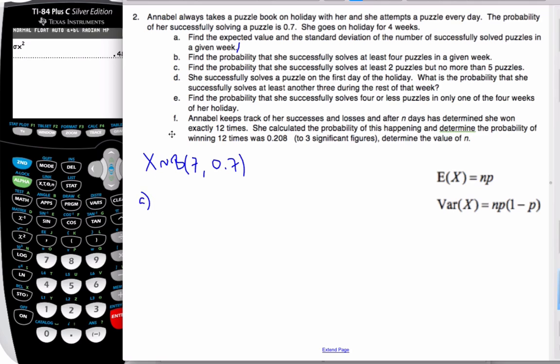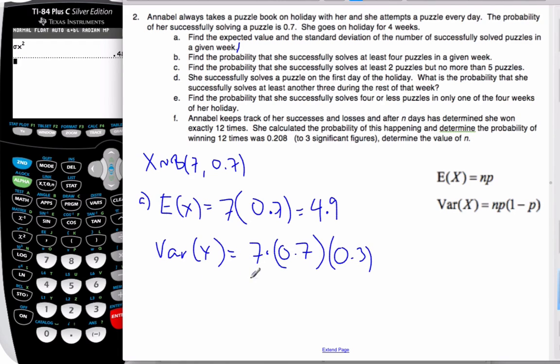And so I am looking for expected value using our formula. I can say that my n is seven and my p is 0.7. So my expected value is Annabelle will solve 4.9 puzzles per week. My variance is 7 times 0.7 times 1 minus p, which is 0.3. This is the variance.